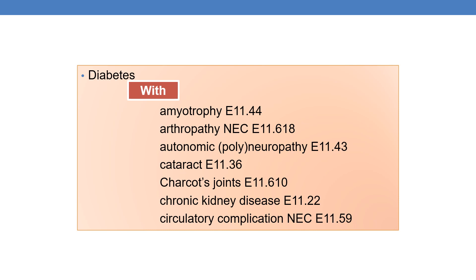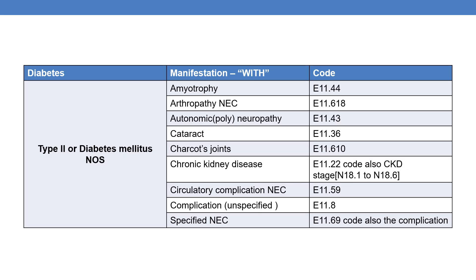Whenever you find 'with' or 'due to', you need to assume a cause-and-effect relationship between the two conditions — that is the ground rule. Now let us see the codes for type 2 diabetes or diabetes NOS. For type 2 and diabetes NOS, there is only one category: the E11 series. We will be discussing only the E11 series.